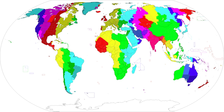UTC plus 0:30 is an identifier for a time offset from UTC of plus 0:30. It was used in the British royal household and is known as Sandringham time. It was stopped in 1936. It was also used in Switzerland until the adoption of Central European time in 1894.